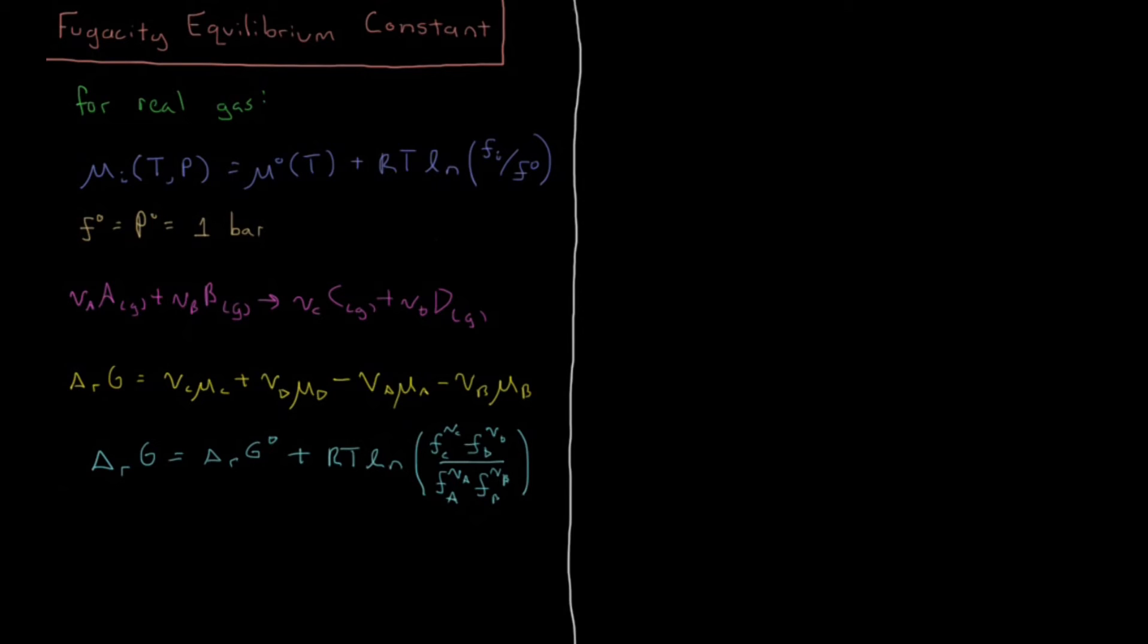Okay, so using this equation here, the reaction is at equilibrium whenever the Gibbs energy of reaction equals zero, so the standard Gibbs energy of reaction is going to equal minus RT log Kf. We're going to define this new equilibrium constant Kf, which is the equilibrium constant in terms of fugacities.